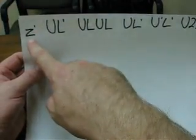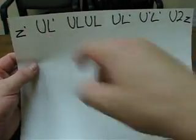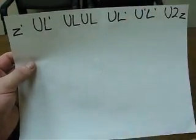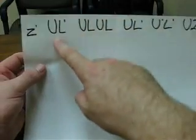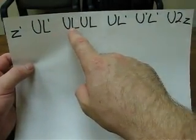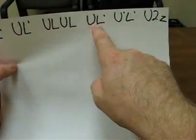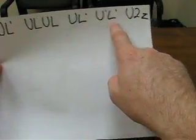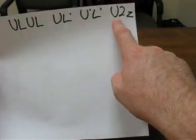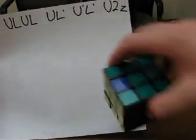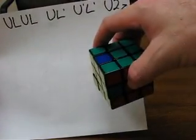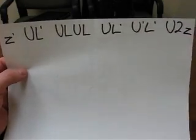So the algorithm is: Z prime — turn the cube sideways — then U, L prime, U, L, U, L, U, L prime, U prime, L prime, U2. Then you finish by doing Z, which is turning it back up again. I'll demonstrate how to perform that right now.